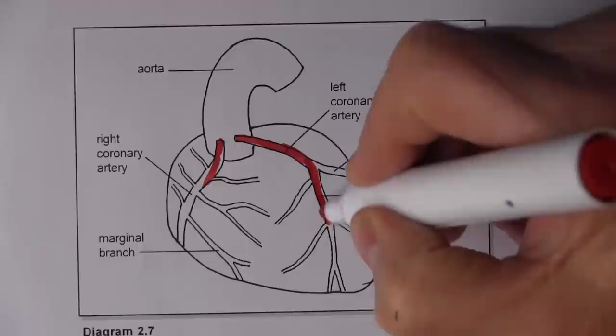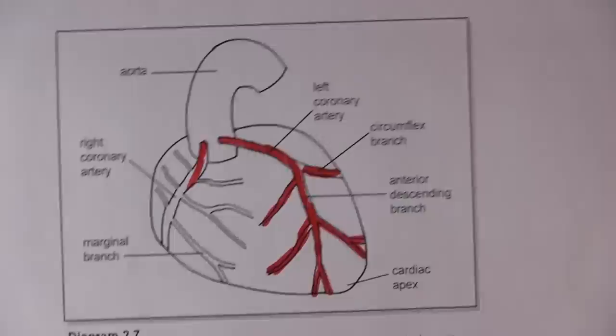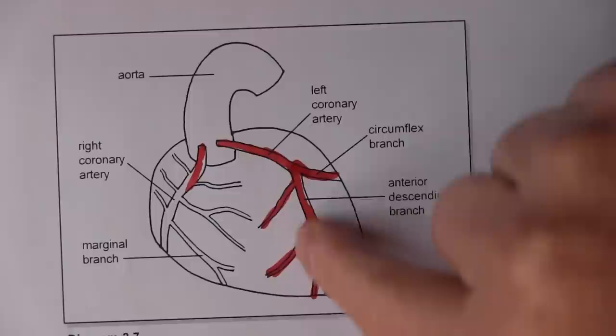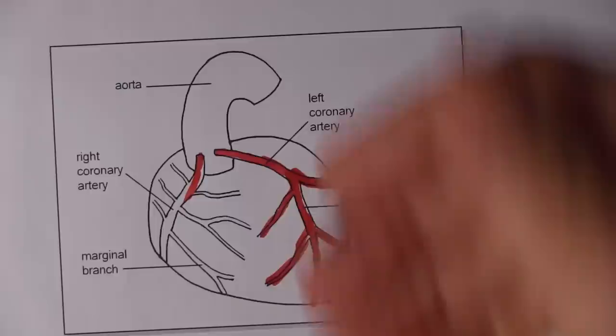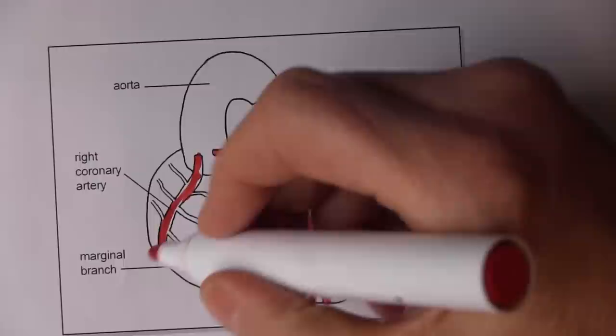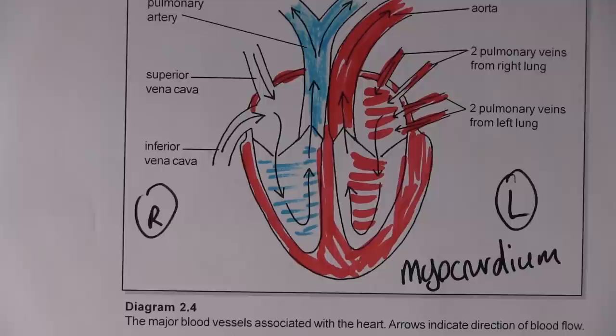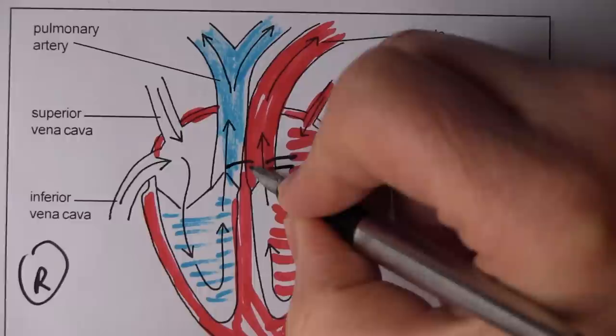The coronary arteries travel over the surface of the heart. The left coronary artery has a main branch going down called the left anterior descending branch, and another that goes around the back called the circumflex, taking blood to the left side of the heart. The right coronary artery takes blood to the right side and the inferior parts of the heart, branching out to supply all parts of the myocardium.